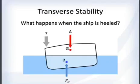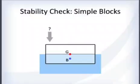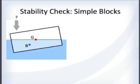Transverse stability is what happens when the ship is heeled — tipped side to side like port and starboard. As an example, take a simple block with a center of gravity and a center of buoyancy. Push down on one side and see what happens.